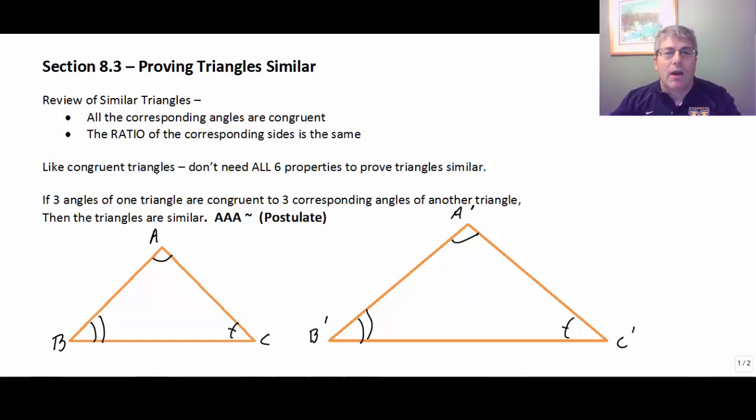So you can have larger triangles and smaller triangles, and that's what similar figures are. And like congruent triangles, we don't need all six properties to prove triangles similar. We're only going to need select things. And the first one we're going to cover is that if three angles of one triangle are congruent to three corresponding angles of another triangle, then the triangles are similar. And this is the angle, angle, angle similarity postulate.